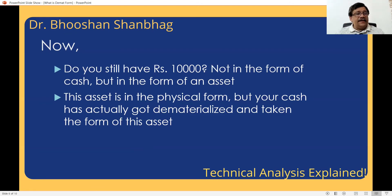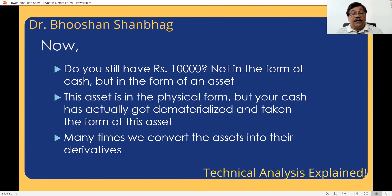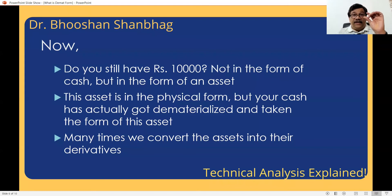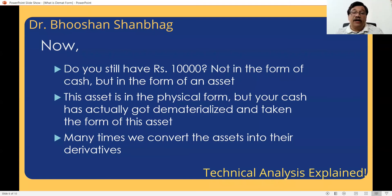In some cases it just goes as an entry in a passbook. Many times we convert assets into their derivatives. What is a derivative? Derivative means derived from, obtained from. This gold you can convert to gold jewellery — so jewellery is a derivative of gold. If you take a piece of gold, that is gold. A coin of gold is also a derivative of gold. A piece of jewellery is also a derivative of gold.